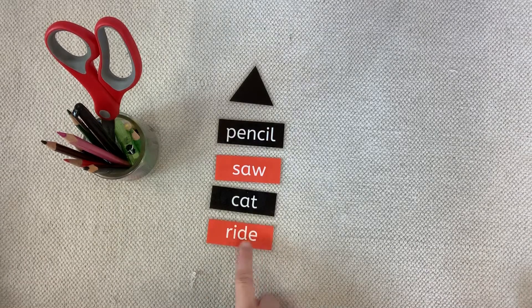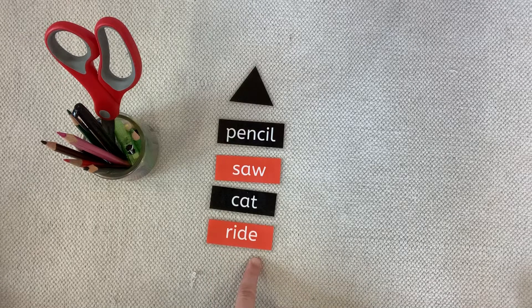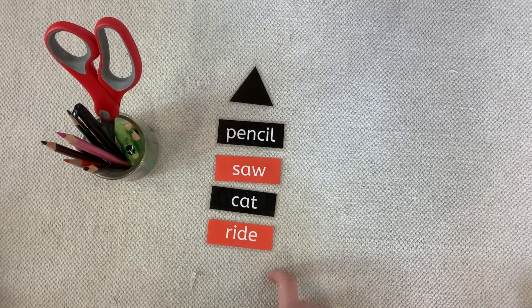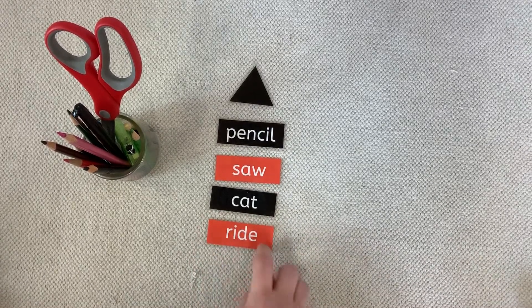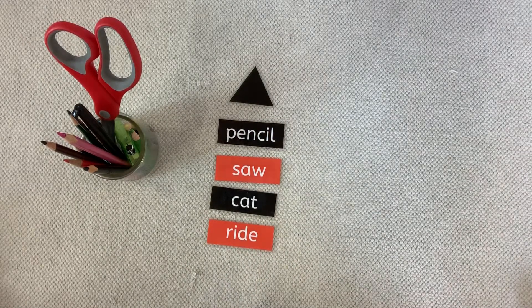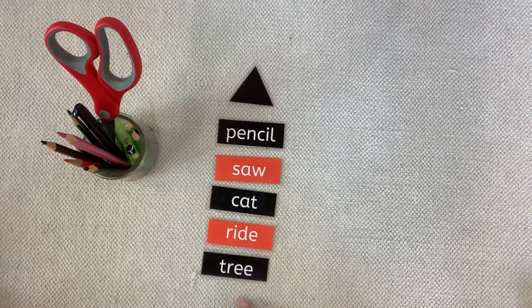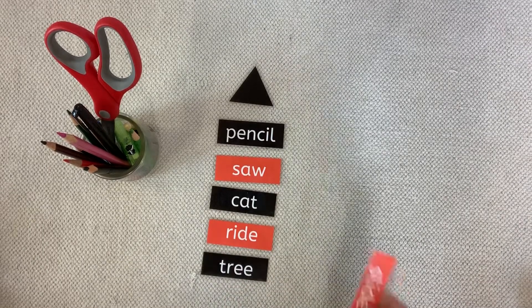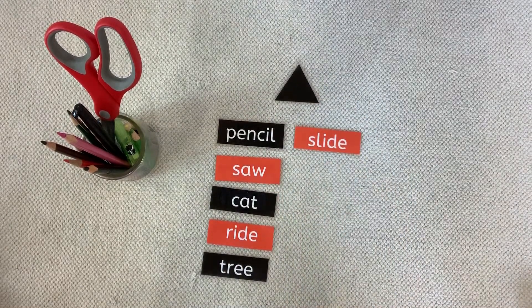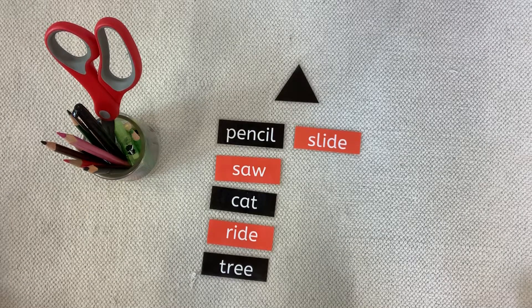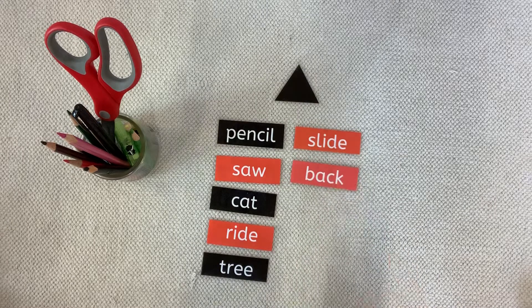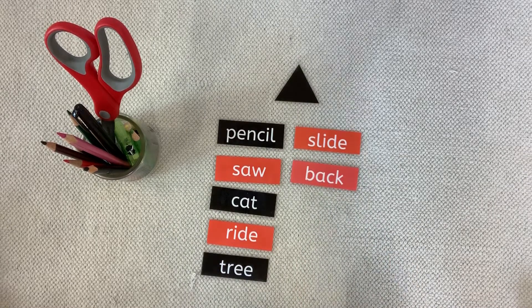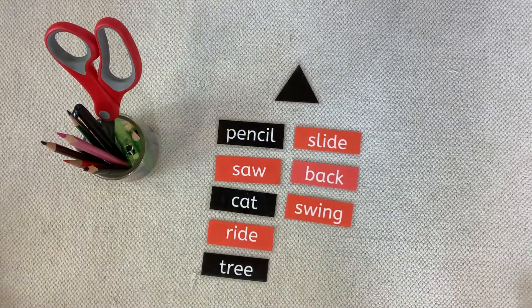What about ride? Is ride a noun? Yes, you could go on a ride at an amusement park — that is definitely something you could touch or bring me. What about tree? Is tree a name? Yes. How about slide? Is slide a name? Yes, you go down the slide at the park. Back — is back a name? Yes, touch your back right now. There you go, that's a name. Swing — is swing a name? Yes, you can go on a swing at recess time.